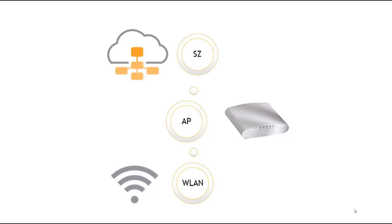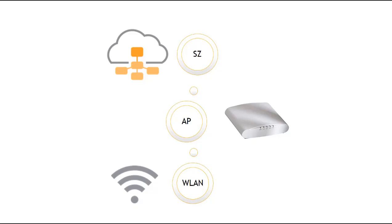In this video we're going to demonstrate access point registration with the SmartZone controller. There's a top-down type of configuration in this environment: you set up the SmartZone controller first, then configure the access points, then the WLANs. At this point we've configured our SmartZone controller, done the initial setup, created domains and zones to put our access points in.